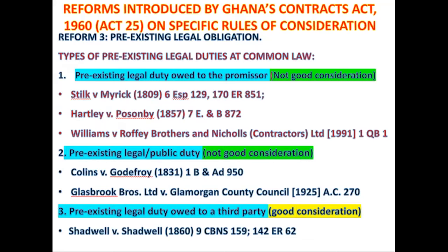The performance of constructing the wardrobes was something the carpenter was already bound to perform. Since he was already bound, he cannot use that performance to support the enforcement of the promise to pay the extra fifty thousand dollars. At common law, the performance of a pre-existing legal obligation owed to the promisor shall not amount to good consideration.